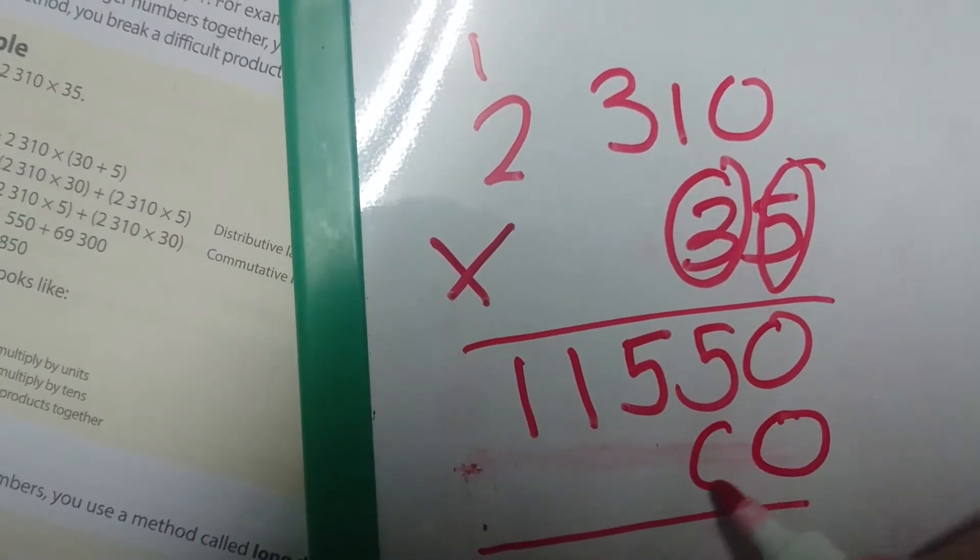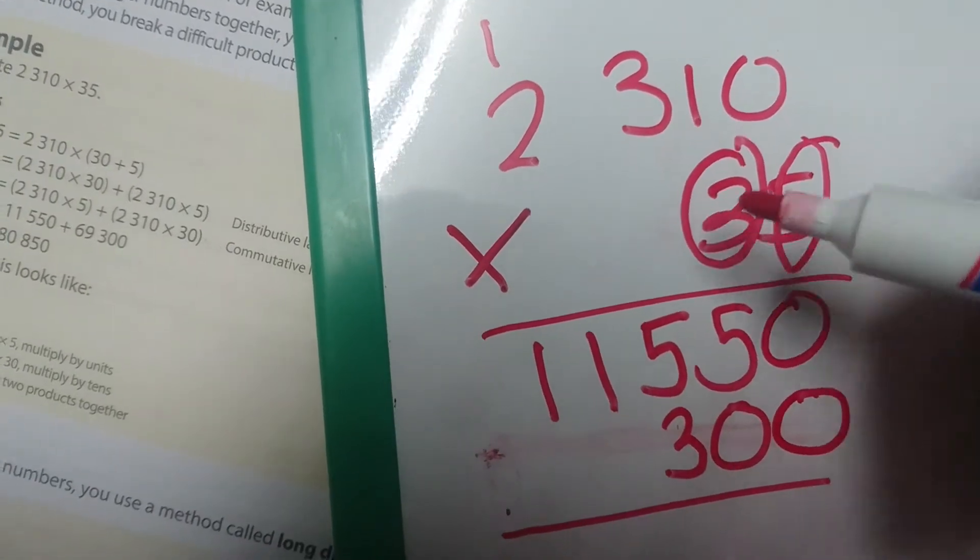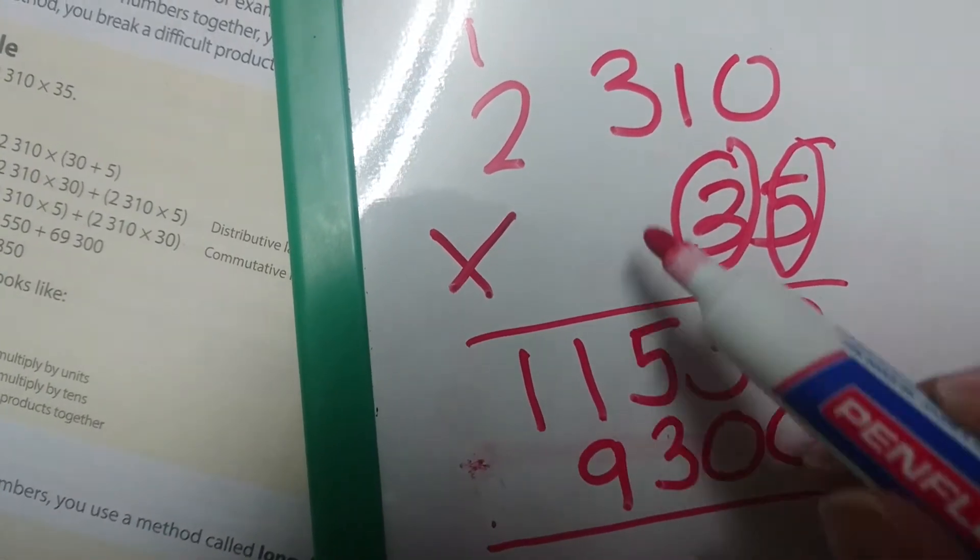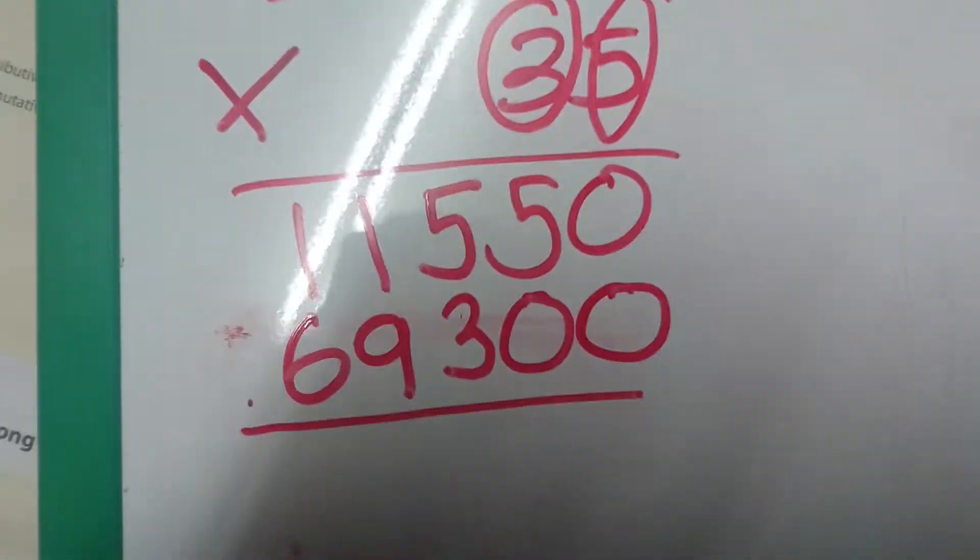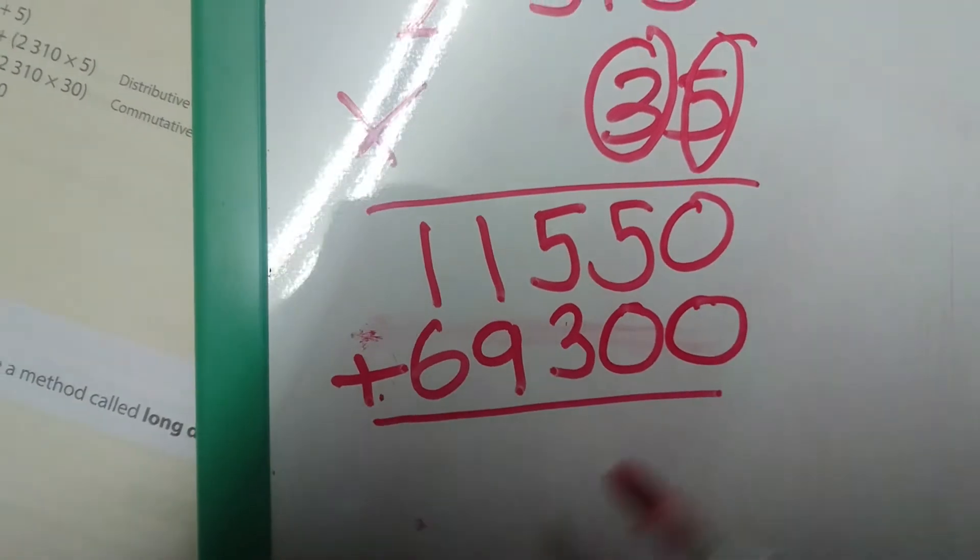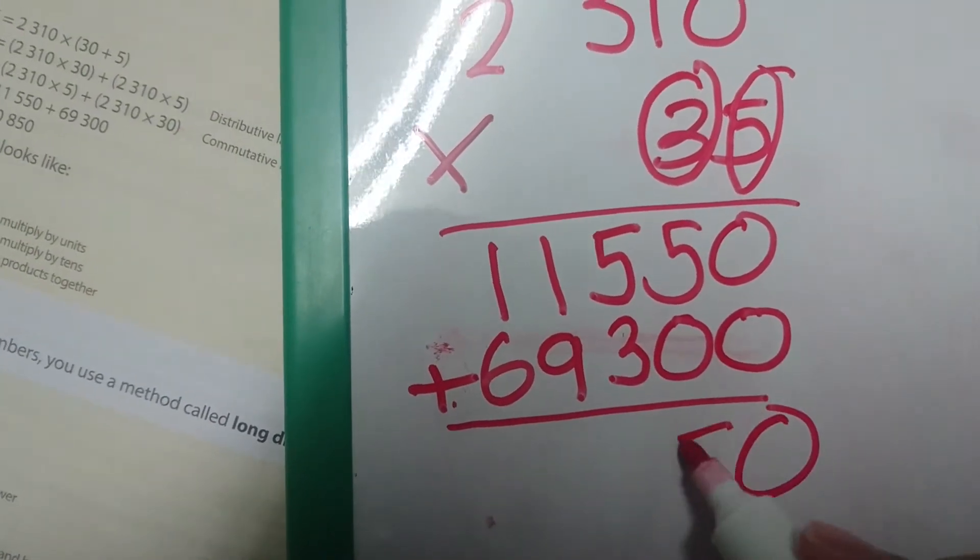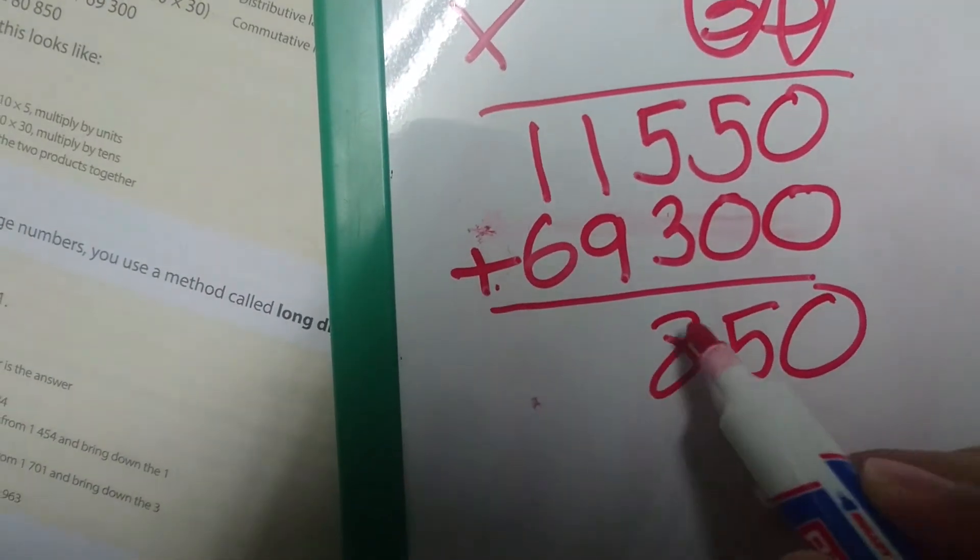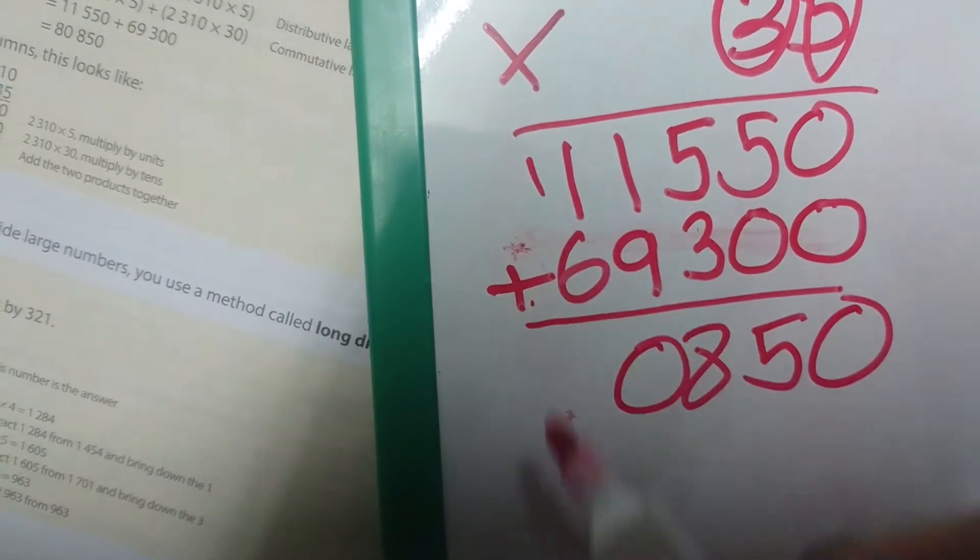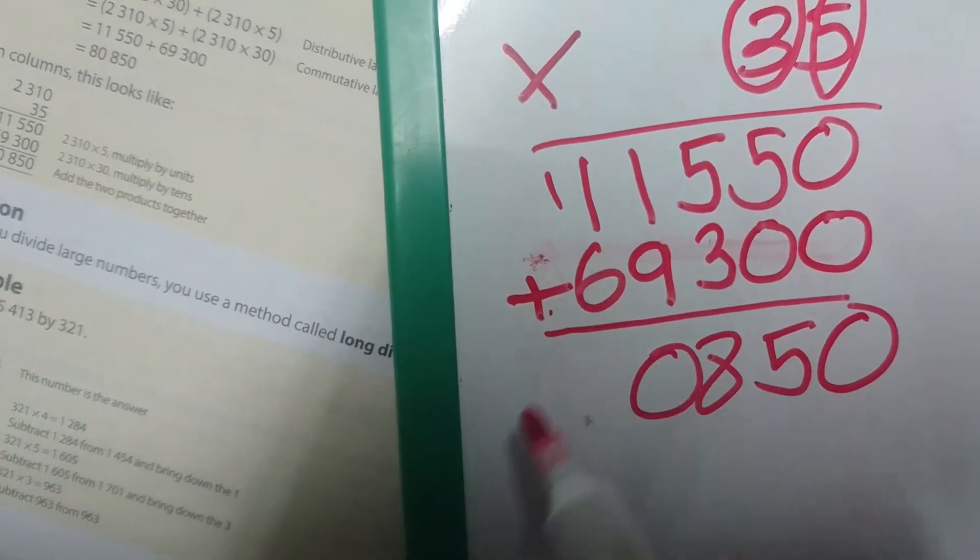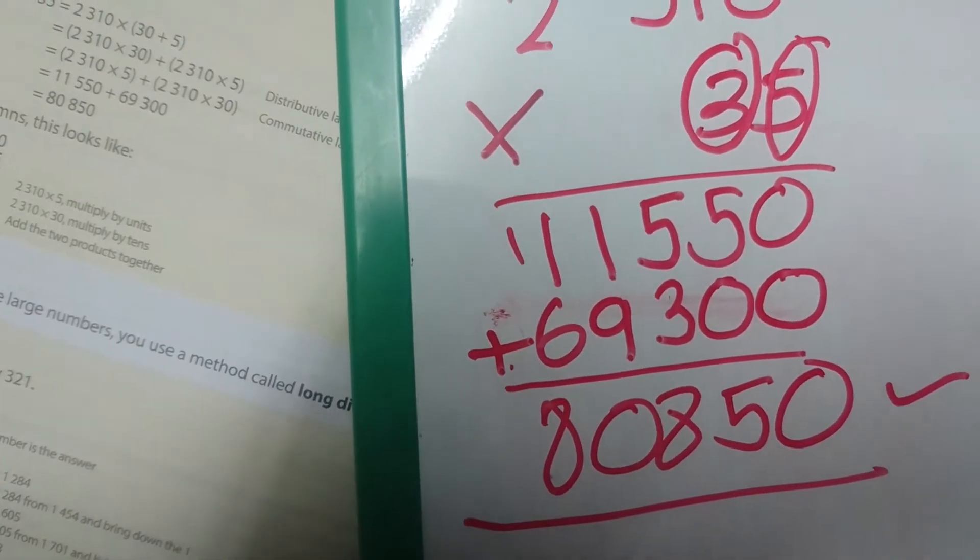0 times 3 is 0, 1 times 3 is 3, 3 times 3 is 9, and 2 times 3 is 6. The next step is to add these two numbers together. 0 plus 0 is 0, 5 plus 0 is 5, 5 plus 3 is 8, 1 plus 9 is 10, carry the 1. 1 plus 6 is 7 plus the 1 is 8. And this is our answer.